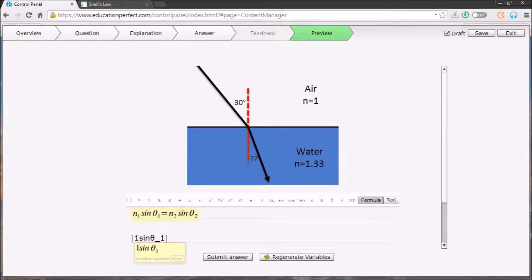And n2 equals 1.33 times sine theta 2. Now we need to put in the angle of incidence. Theta 1 is then 30, just like that. This is all we need to figure out the angle of refraction.